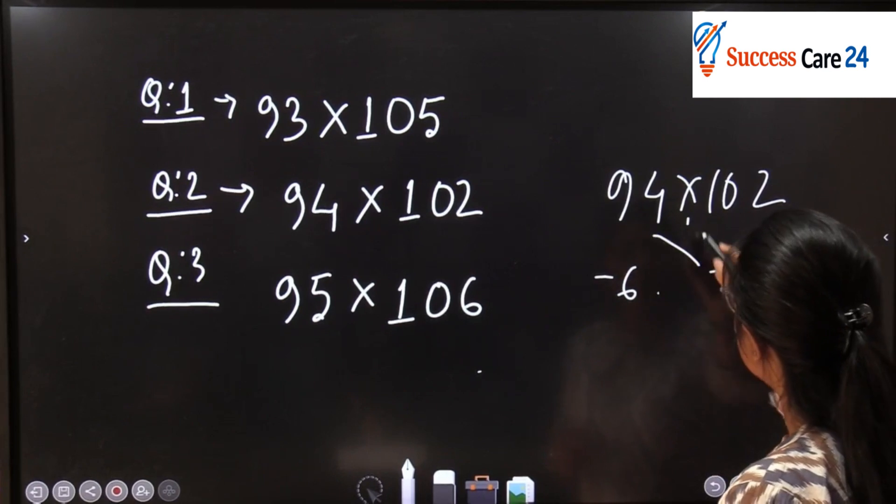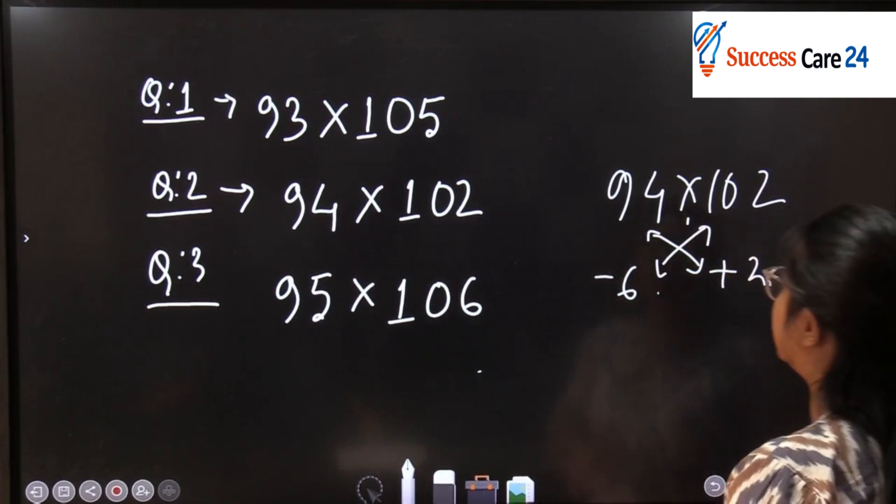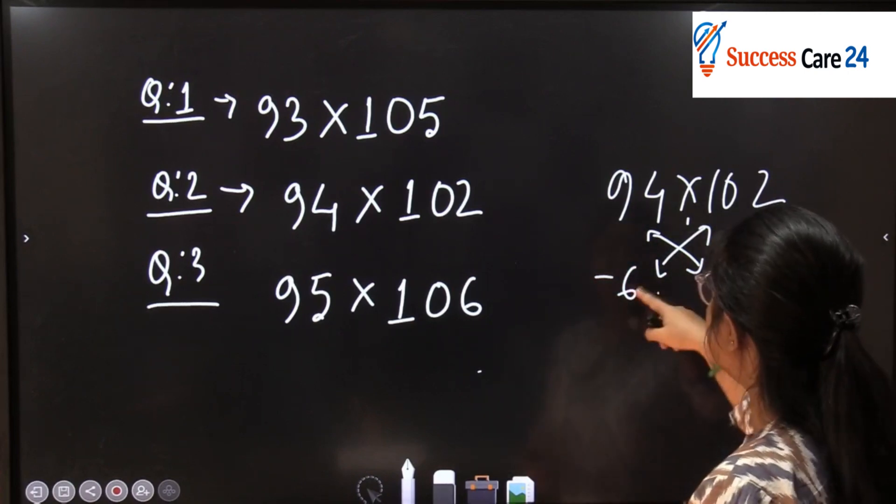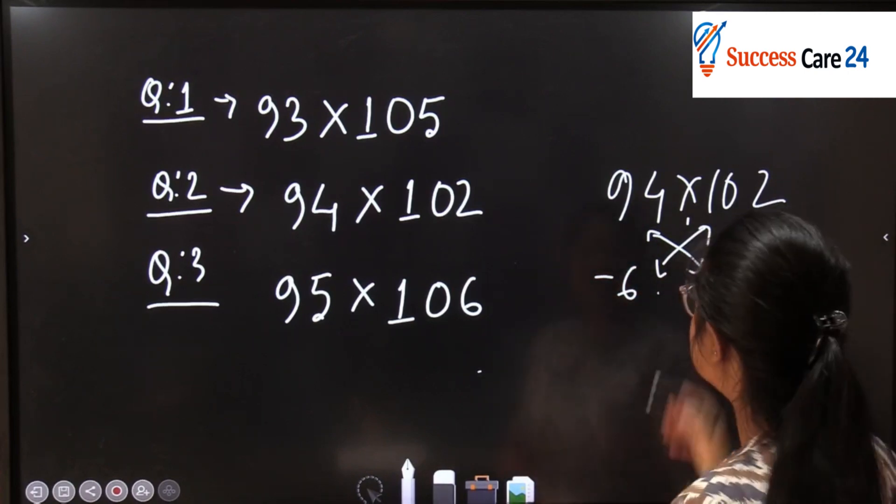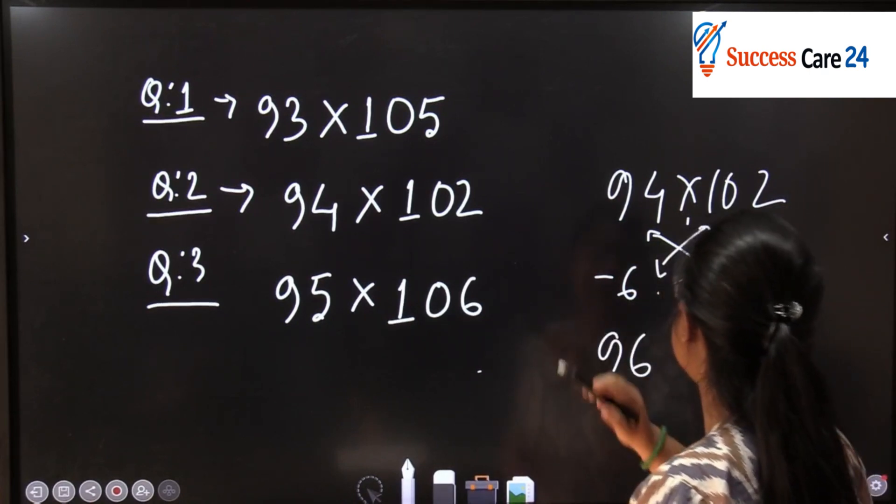And then we will do crosswise addition or subtraction. So what will we do? 94 plus 2, or 102 minus 6. Same result you will get. You will get 96.